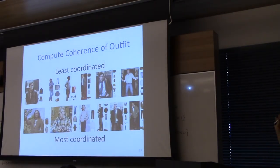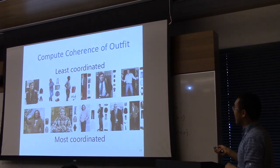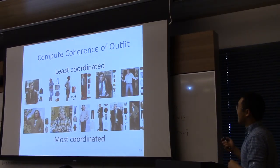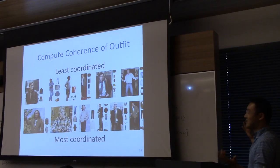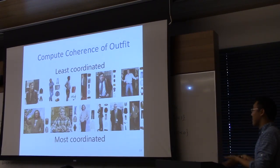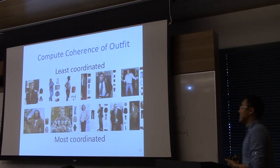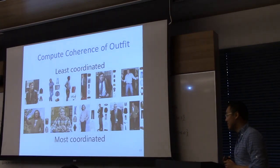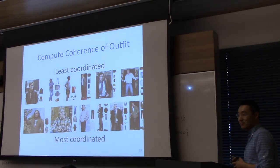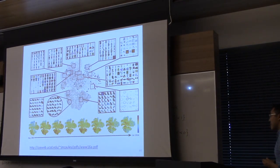You can also compute the coherence of an outfit by computing the average pairwise distance of items in the embedding space, to figure out if an outfit is most or least coordinated as measured by aggregate Amazon purchase activity. You could also model stylistic preferences over time, incorporating both frequently-purchased-together signals and ratings.